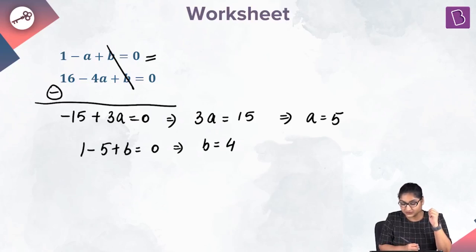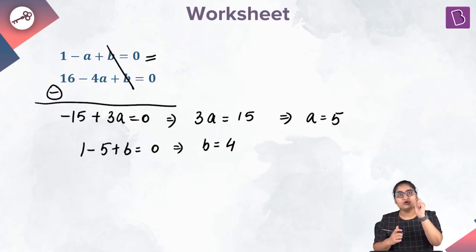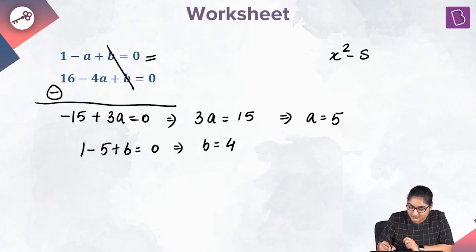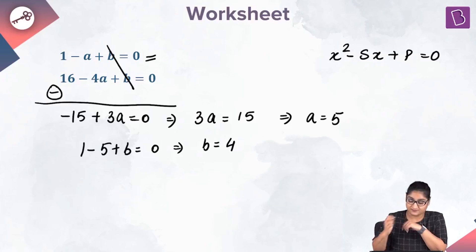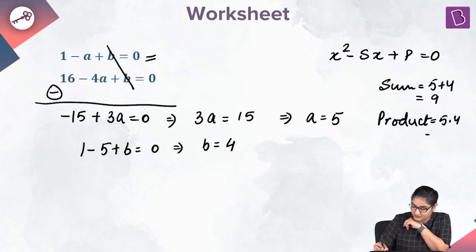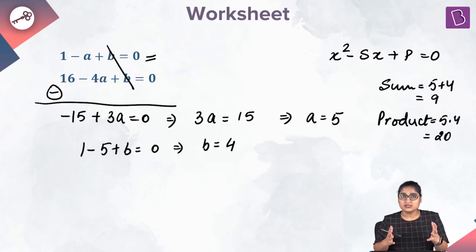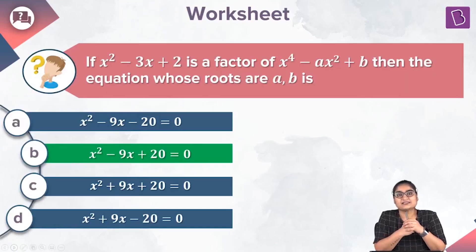Substituting a equal to 5 into 1 minus a plus b equal to 0 gives 1 minus 5 plus b equal to 0, so b is equal to 4. Now we form the equation whose roots are a and b, i.e., 5 and 4. The sum of roots is 9 and the product is 20, so the equation is x square minus 9x plus 20 equal to 0, which is option B.